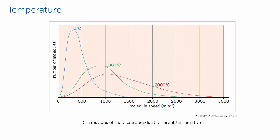And the second thing is that the distribution broadens out, meaning that there's a much greater range of speeds as you go up to higher temperatures.